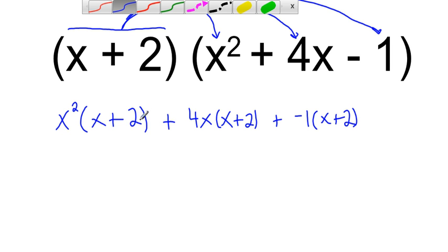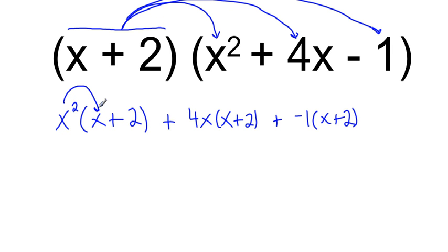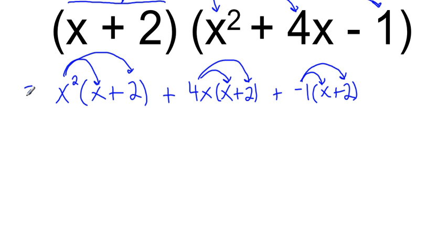So now what I've got to do, and I have to distribute again three more times. So I have to go through with the x squared to each one of these terms, the 4x, and then the negative 1. So you have to be really careful. There's a lot of little places that you can make mistakes. So make sure you take your time when you're going through this and show all your steps.